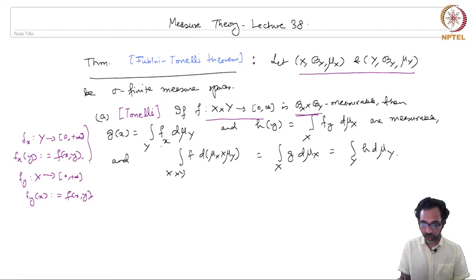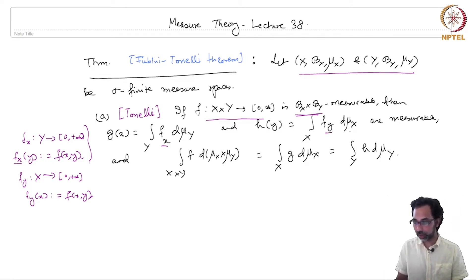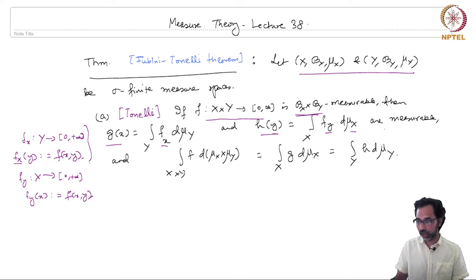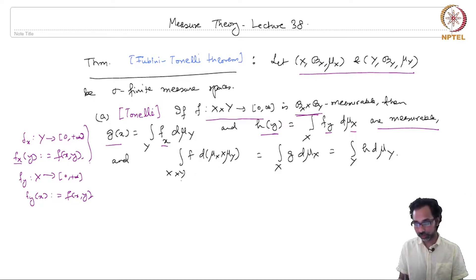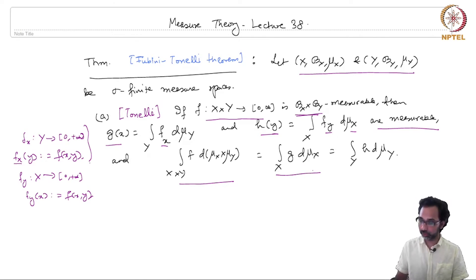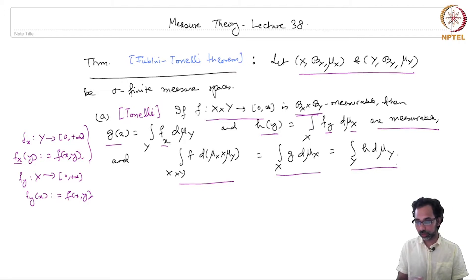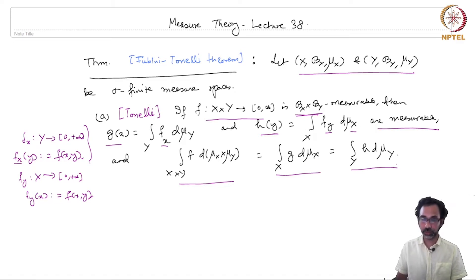The integral of f_x with respect to the measure d mu_y is a function of x, and similarly the integral of f_y with respect to mu_x is a function of y. These two functions g_x and g_y are measurable — this is the first assertion in the theorem. Secondly, if you integrate f with respect to the product measure over the product space X cross Y, this equals the integral of g with respect to mu_x, and equals the integral of h with respect to mu_y. This is Tonelli's theorem, valid for unsigned measurable functions in the product sigma algebra.